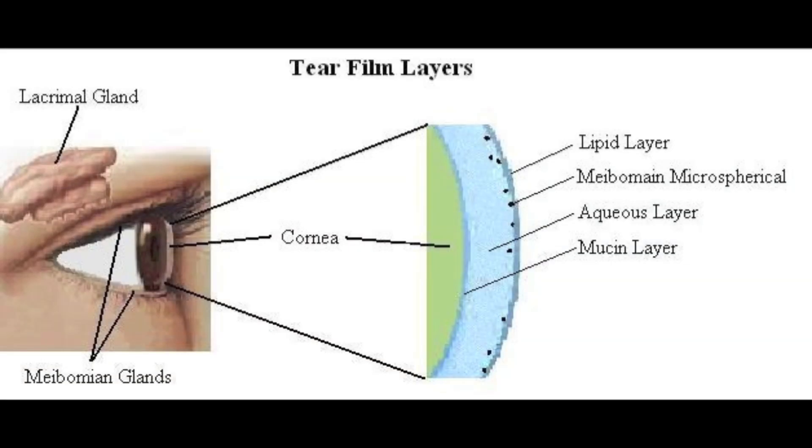There are four main layers to the tear film: the lipid layer, the meibomian microsphericals, the aqueous layer, and the mucin layer.